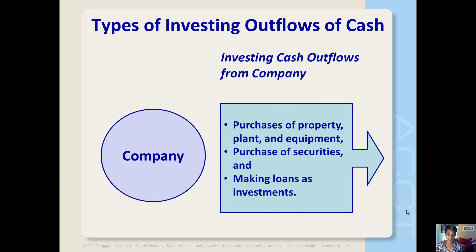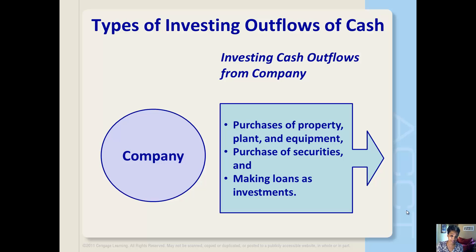Cash outflows would include the purchase of property, plant and equipment, and the purchase of securities — again, this isn't repurchasing our own securities, but the purchase of securities related to other companies. Also, making loans as investments is a cash outflow. Loans directly related to the sale of products and services are probably going to be classified as operating activities. Interest on loans included as an investing activity are also going to be classified as cash flows from operating activities.